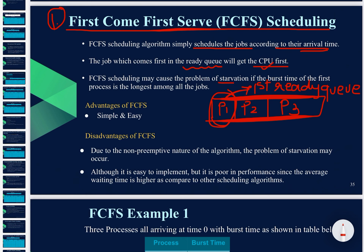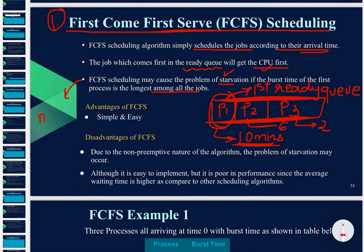FCFS scheduling may cause a problem of starvation if the burst time of the first process is the longest. For example, if the burst time of process 1 is 10 minutes, process 2 is 6 minutes, and process 3 is 2 minutes, it will lead to starvation. Because it is a non-preemptive scheduling algorithm, until process 1 completes, other processes cannot be allocated to the CPU.